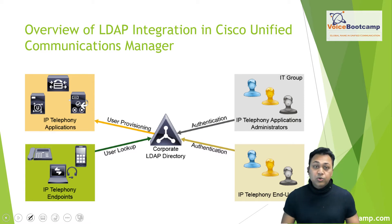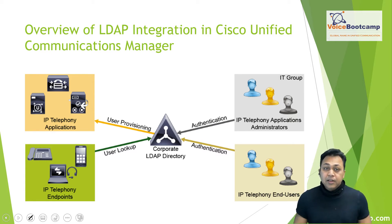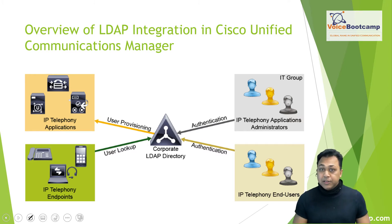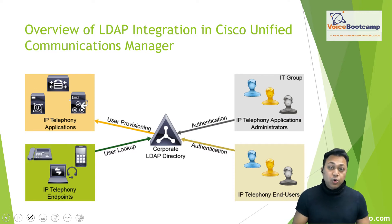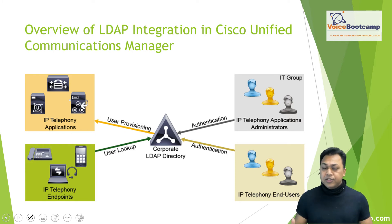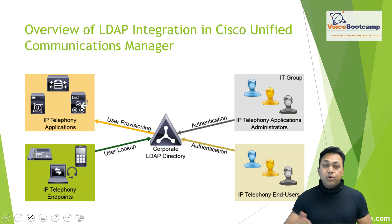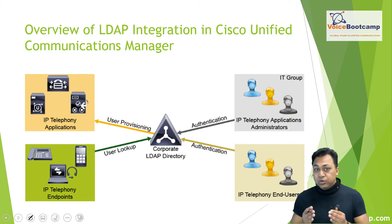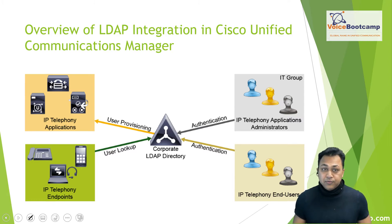Another requirement for integration might be provisioning users from the corporate directory into the user database for various applications. This method avoids having to add, remove, and modify core user information manually each time changes occur. For example, if you have a user account called 'fcon' created in five separate devices, whenever something changes about that username, you would have to modify five different devices. Rather, you do it once in the LDAP server and all five different applications or devices will see that updated information.